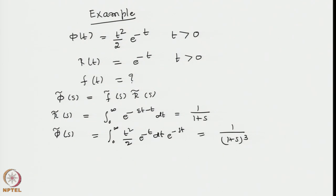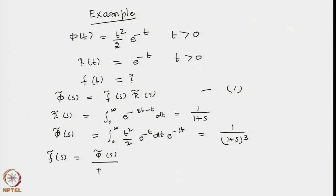That result is easily seen as a gamma function: when you factor out (s+1), the integral of t squared times e to the power minus(s+1)t is evaluated. From the knowledge of phi-tilde and applying the convolution theorem, the Laplace transform of the quantity of interest — f-tilde(s) — is nothing but the ratio of the Laplace transform of the output function and the response function, which turns out to be 1 divided by (1 plus s) squared.